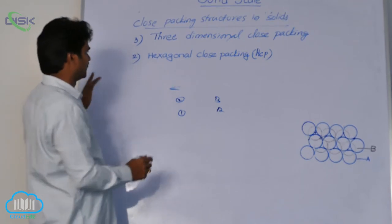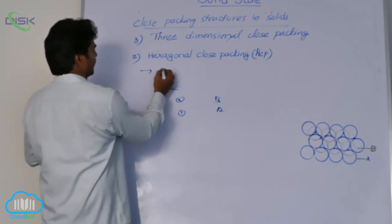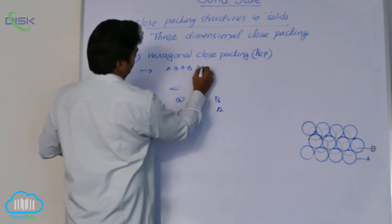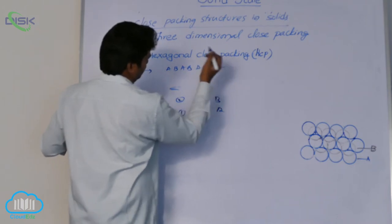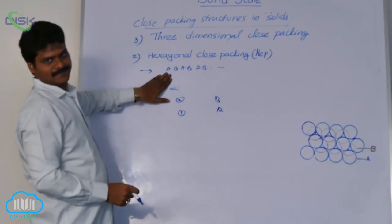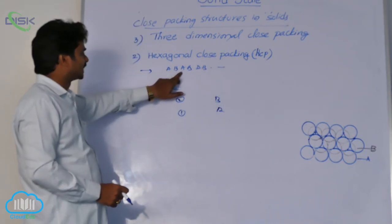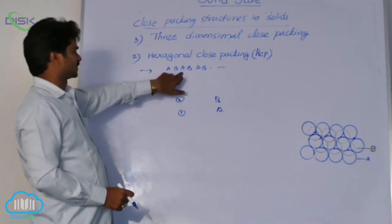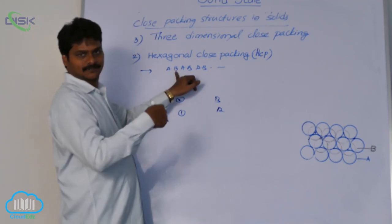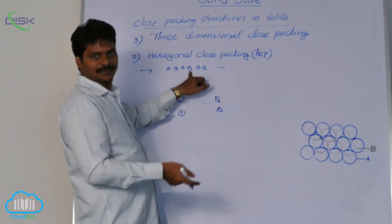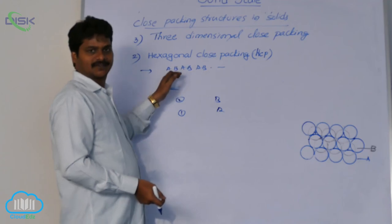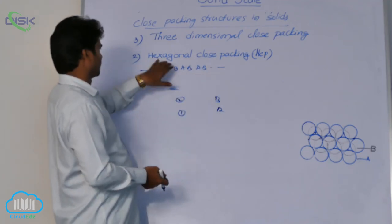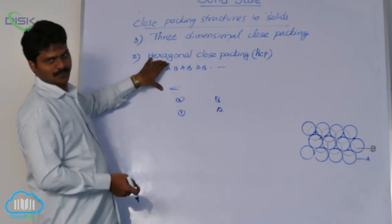This type of arrangement gives hexagonal A, B, A, B type arrangement. The first layer is A, and the third layer is also A. If the second layer is B, the fourth layer is also B. In that way, an A, B, A, B type layer structure is obtained in hexagonal close-packing.